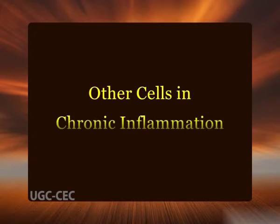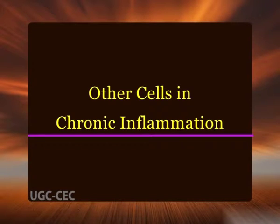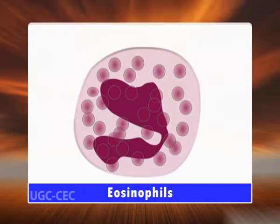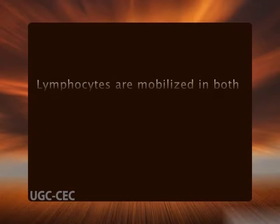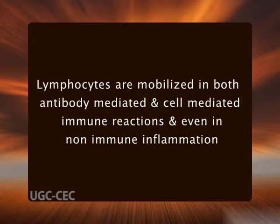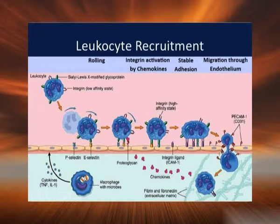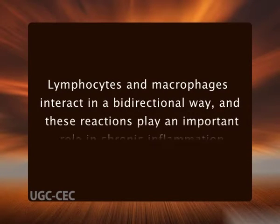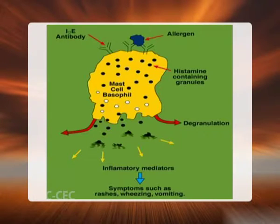Other cell types present in chronic inflammation include lymphocytes, plasma cells, eosinophils, and mast cells. Lymphocytes are mobilized in both antibody-mediated and cell-mediated immune reactions and even in non-immune inflammation. Antigen-stimulated lymphocytes use various adhesion molecule pairs and chemokines to migrate into inflammatory sites. Cytokines from activated macrophages — mainly TNF, interleukin-1, and chemokines — promote leukocyte recruitment, setting the stage for persistence of the inflammatory response. Lymphocytes and macrophages interact in a bidirectional way, playing an important role in chronic inflammation.